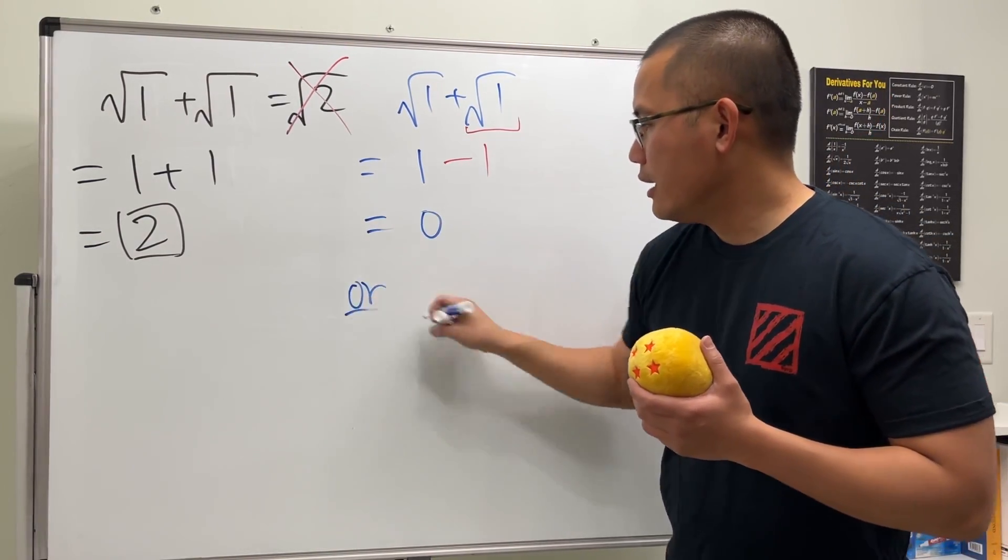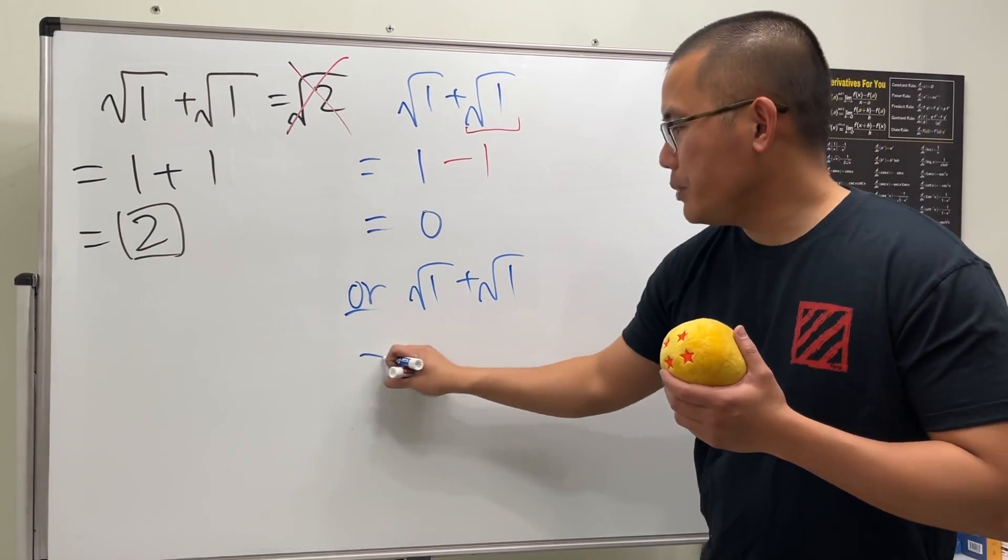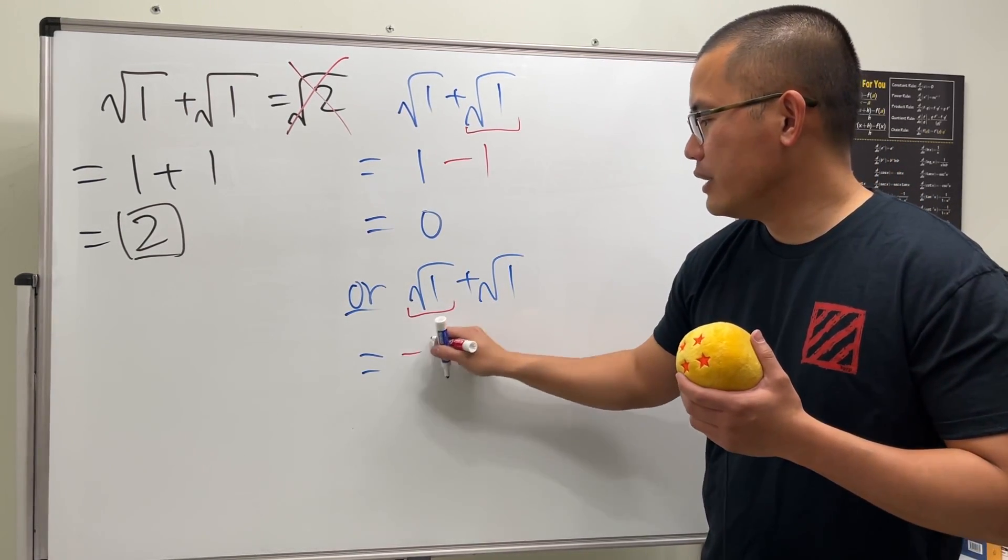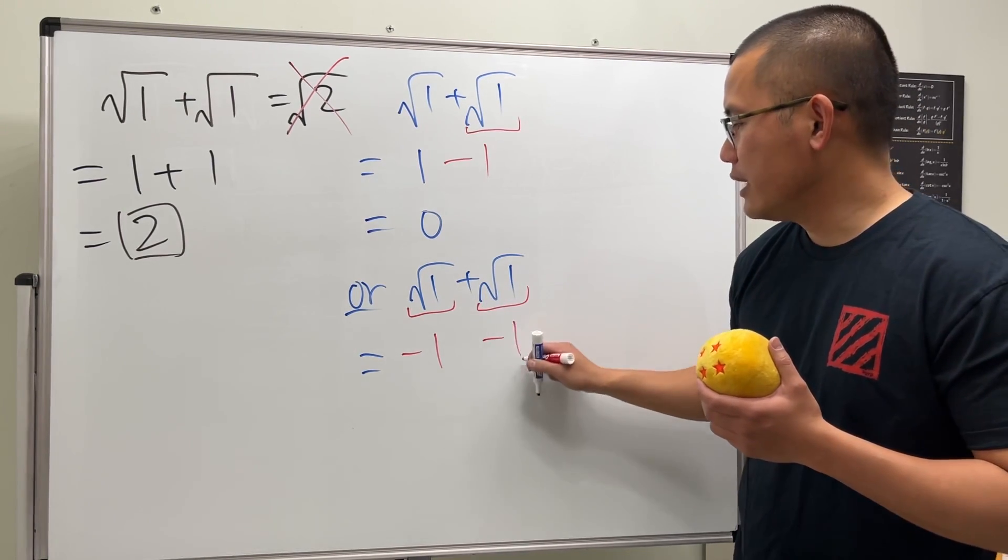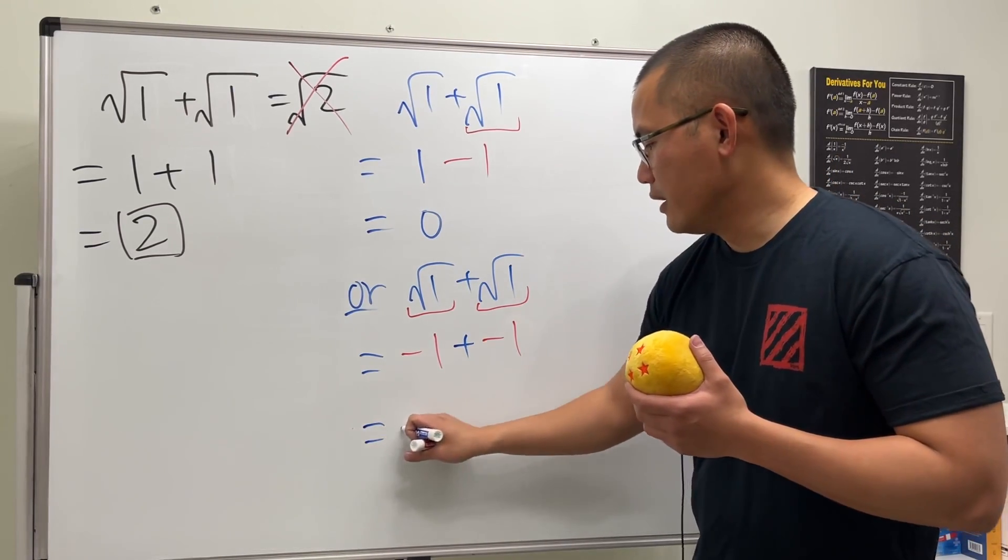And then, some other people will tell you, what if we have square root of 1 plus square root of 1? Maybe this square root of 1 gives you negative 1, and this right here also gives you negative 1. So together, negative 1 plus negative 1, we have negative 2.